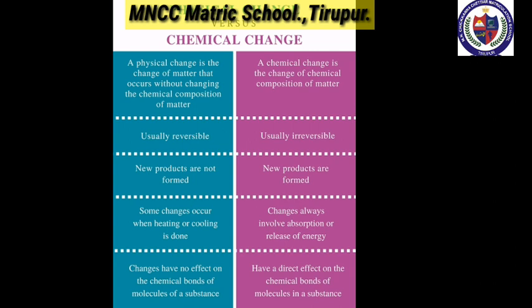Before going into the specific conditions of chemical reactions, we need to know the difference between physical and chemical changes. A physical change is a change of matter that occurs without changing the chemical composition. For example, the molecular formula of water is H₂O — two hydrogen atoms and one oxygen atom. If water is changed to solid state (ice), the molecules of ice still have the same hydrogen and oxygen atoms.